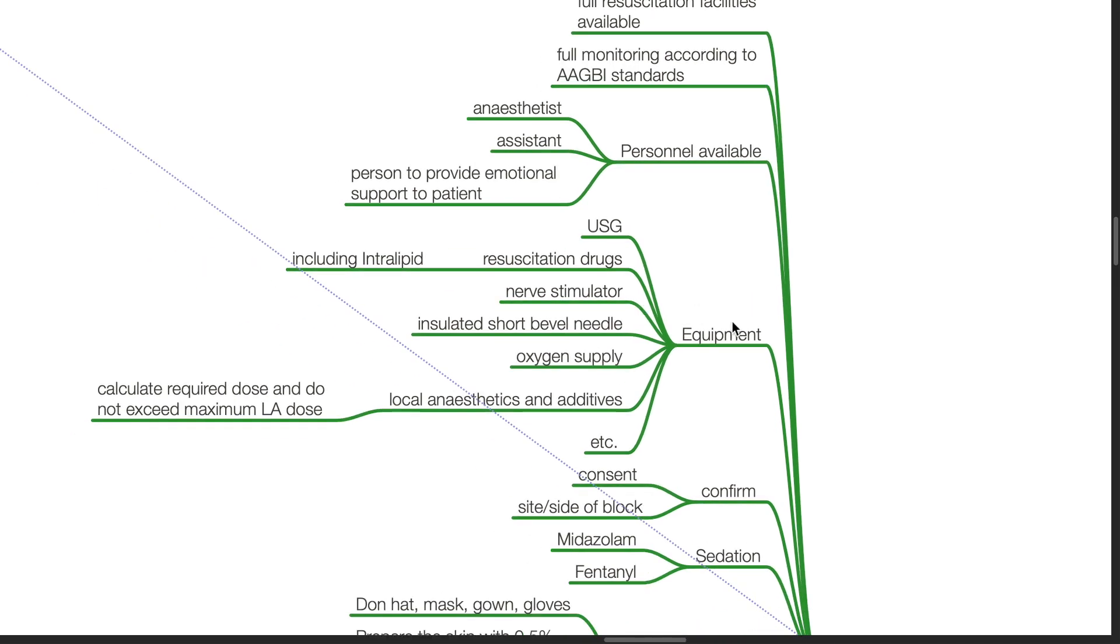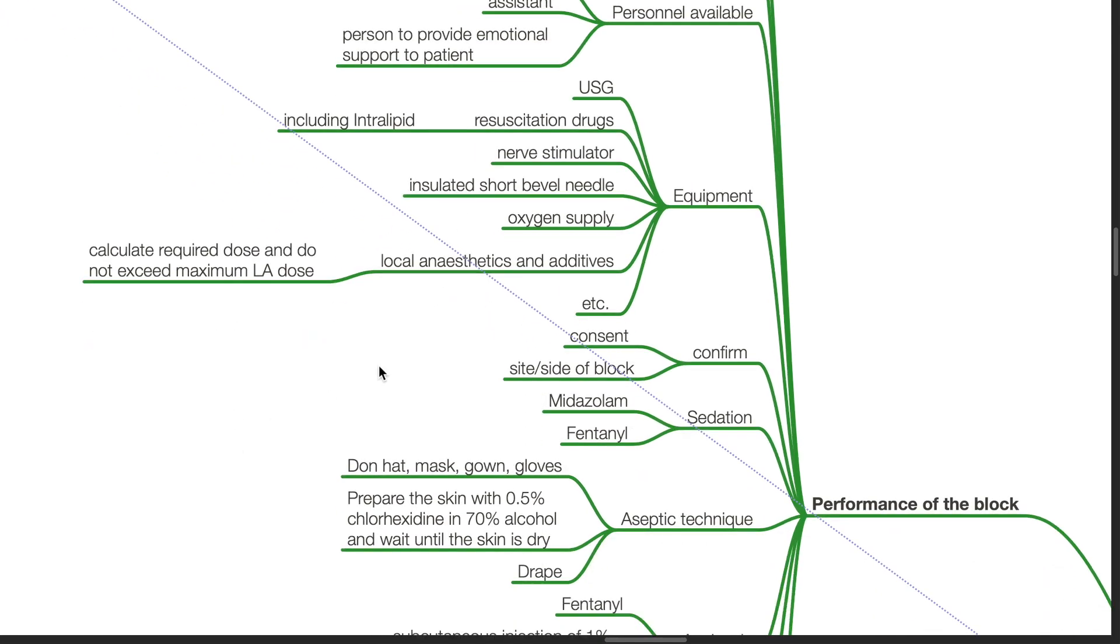Equipment needed includes ultrasound, resuscitation drugs including intralipid, nerve stimulator, insulated short bevel needle, oxygen supply, local anesthetics and additives. Calculate the required dose and do not exceed maximum local anesthetic dose. Confirm consent and side of the block.